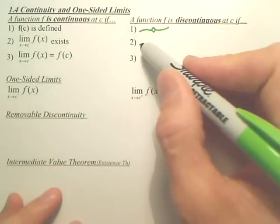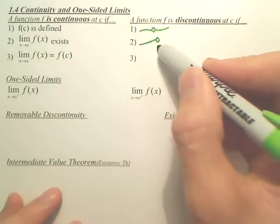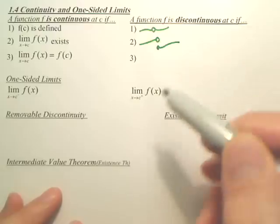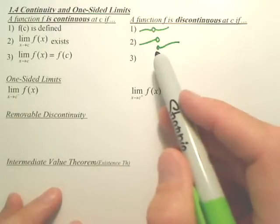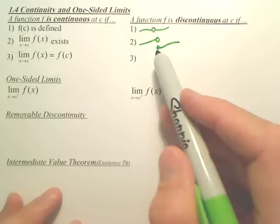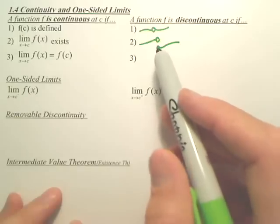An example of that not working would be something like this. Does the limit exist? No. That's the picture of a non-existing limit. Now, you could also have an asymptote or an oscillation, but that's one example.